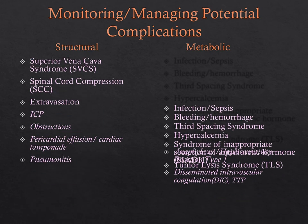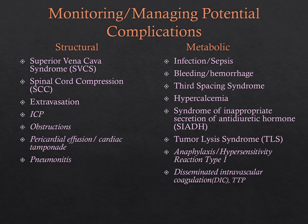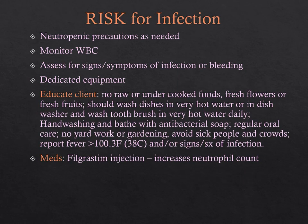Monitor and manage potential structural and metabolic complications. The biggest concern is infection risk — place clients on neutropenic precautions as needed, monitor white blood cell counts, and assess for signs and symptoms of infection. Educate clients: no raw or undercooked foods, no fresh flowers or fresh fruit, thorough hand washing, wash toothbrush and dishes properly, avoid sick people or crowds, regular oral care, no yard work or gardening, and report a fever over 100.3°F. Filgrastim can be given to increase neutrophil count and decrease infection risk.